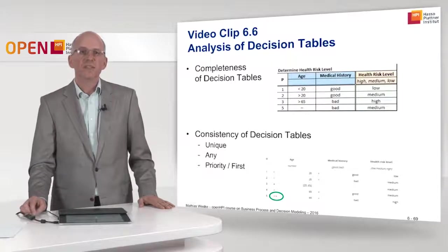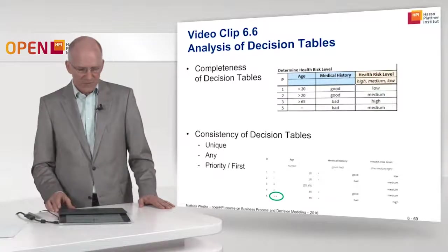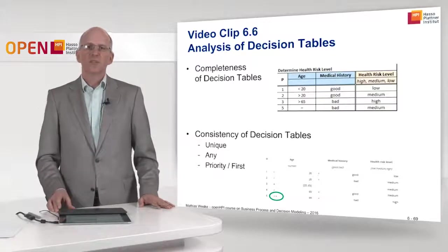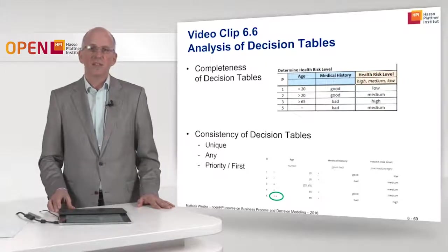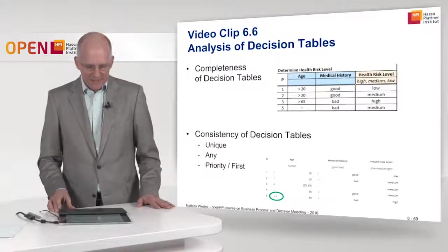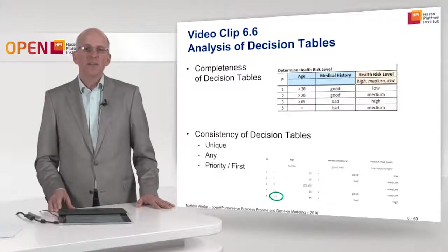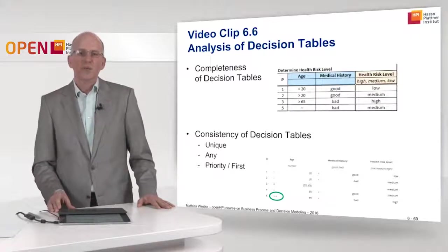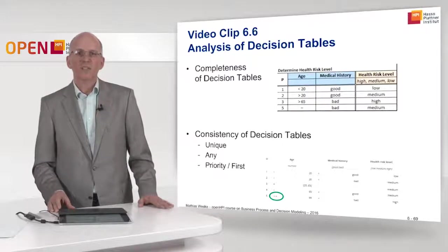This brings us to the end of video clip 6.6 in which we analyzed decision tables. First, we looked at completeness and argued that it's important for decision tables to be complete, to avoid situations where decisions simply cannot be taken. The second property we analyzed is consistency of decision tables, where we can check consistency for unique and any single hit properties, but not for priority and first, since they are more flexible and their consistency cannot be checked in the same way.